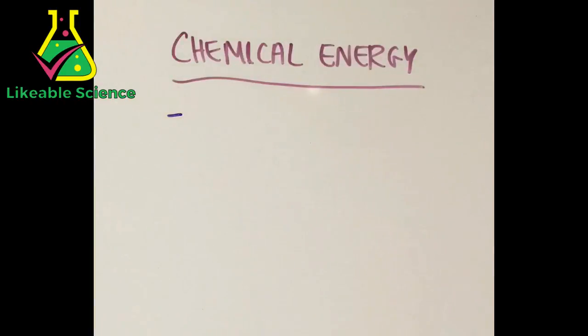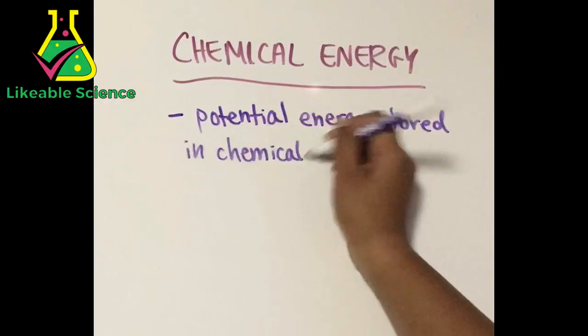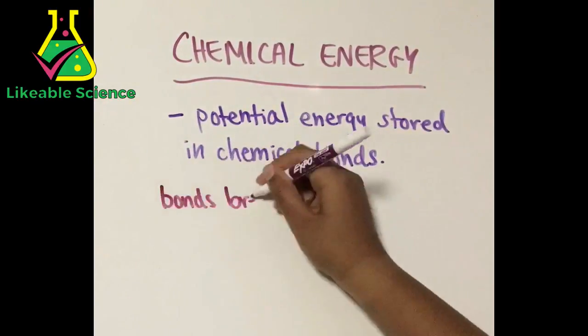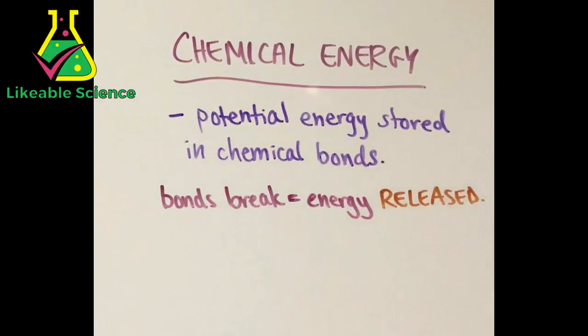The last form of energy that has to do with particles and objects is chemical energy which is potential energy stored in chemical bonds. When the bonds break, energy is released. For example, this apple is storing chemical energy.